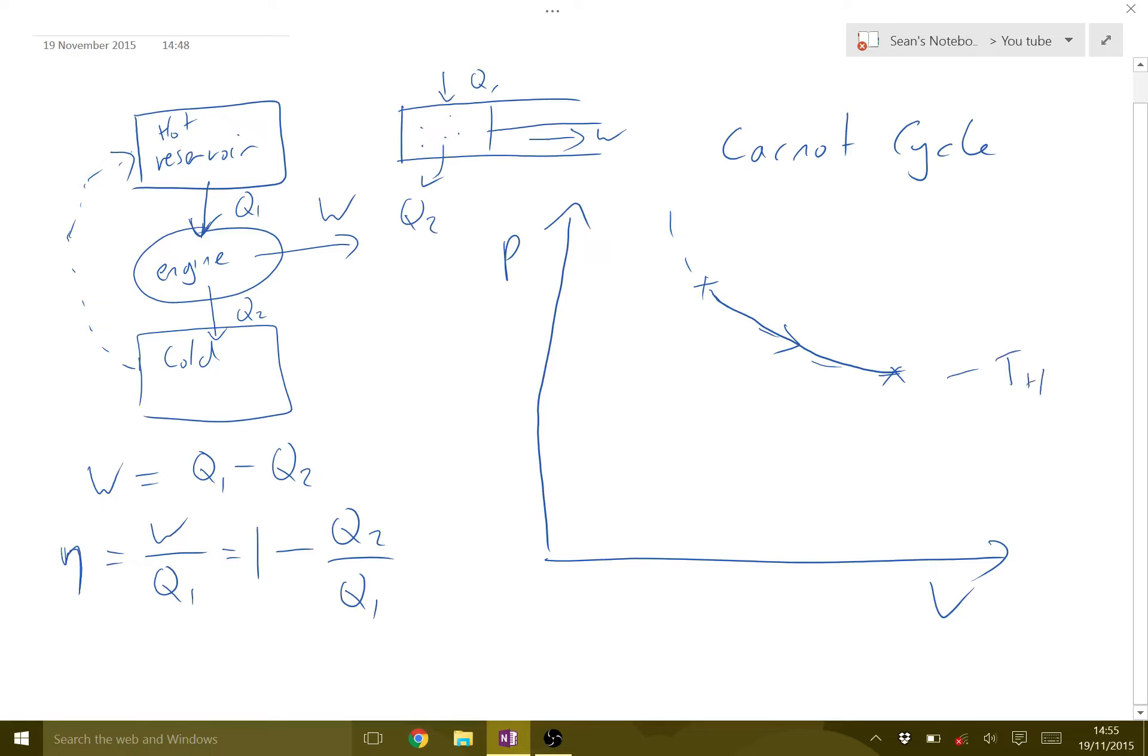So this is where we start. We start here at A, and then we have an isothermal expansion to B. So we're increasing the volume.